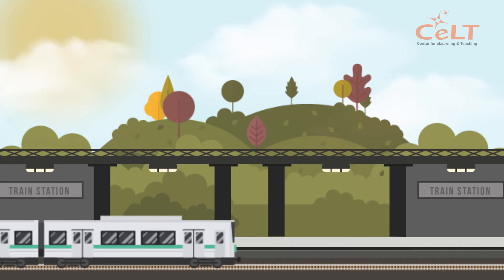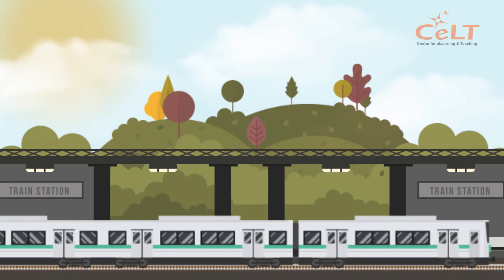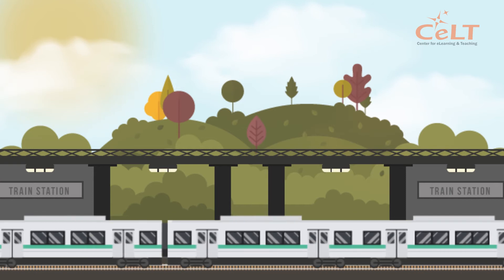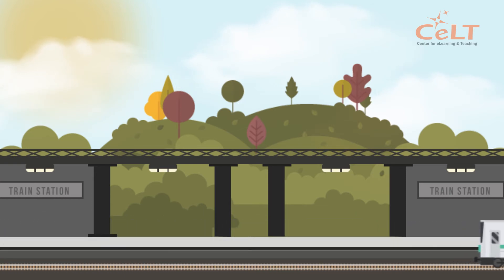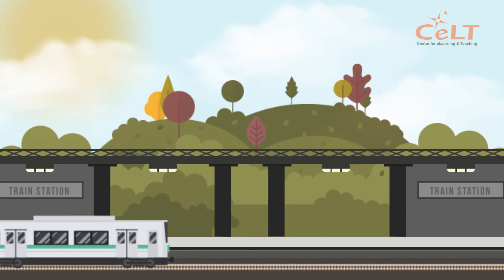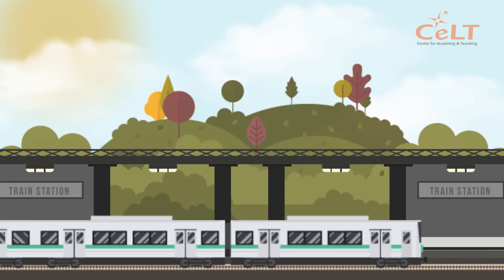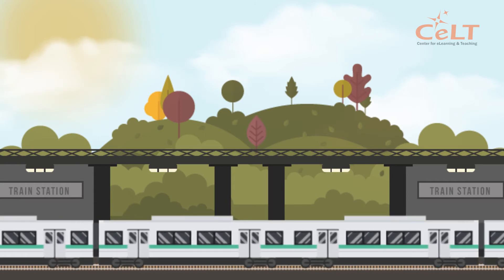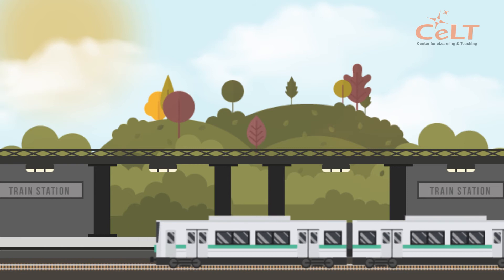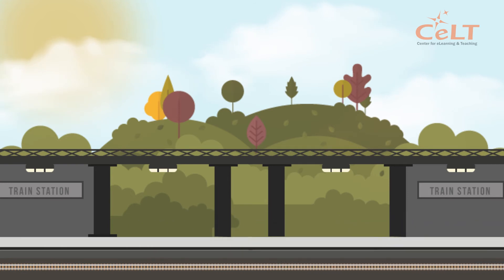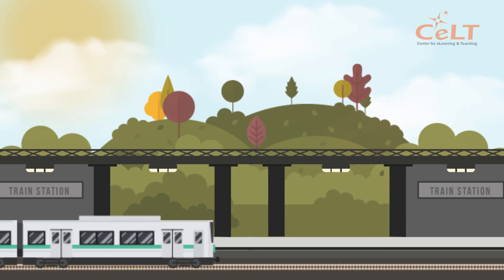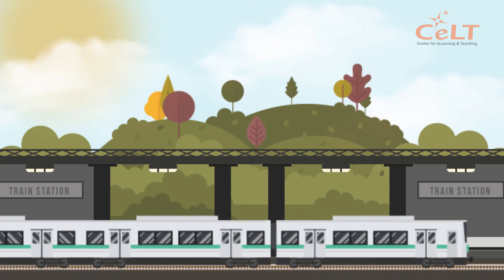Rail transportation can also be categorized under land transportation. Rail transportation has been in Malaysia since the late 19th century, with the aim to speed up transportation from tin mining areas to ports along the coast. But now, rail transportation is one of the country's most important transportation modes. The Ministry of Transportation and other agencies are the leaders in the rail transport system in Malaysia.